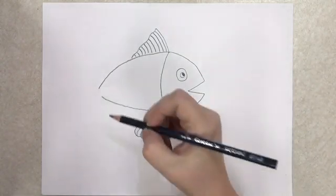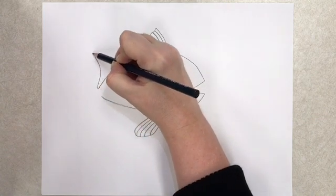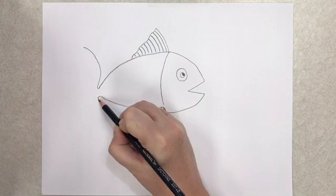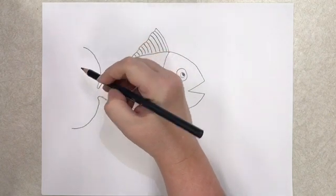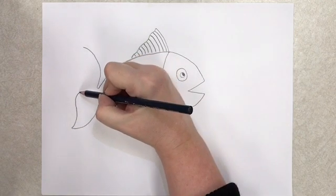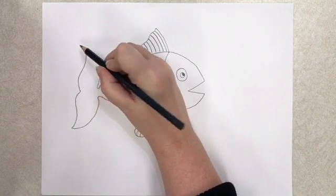Now it's time to add the tail. So I'm going to curve a line out and up, and curve a line down. Then I'm going to connect it. I'm going to make an S line going to the bottom, and an S line going to the top.